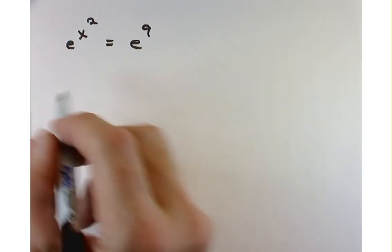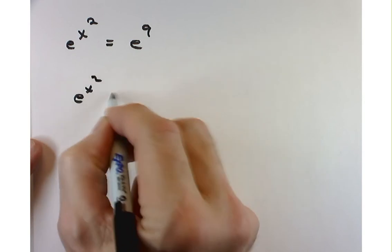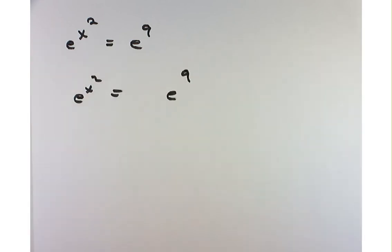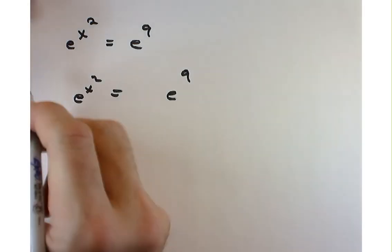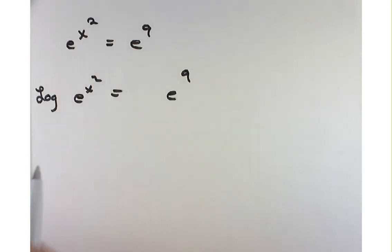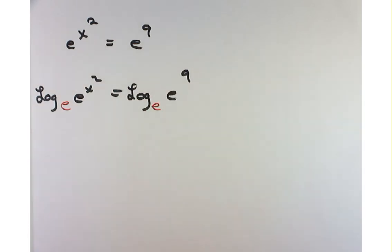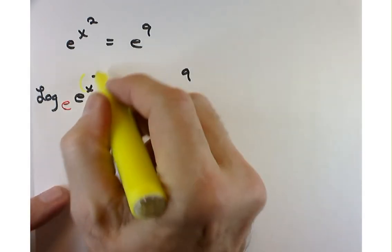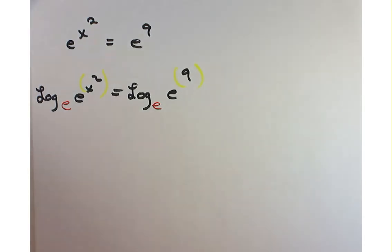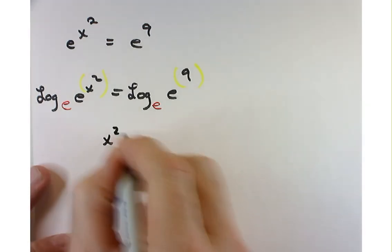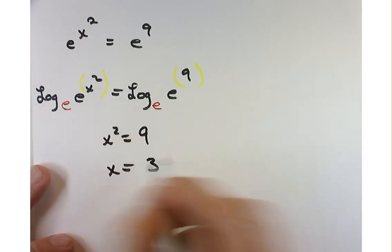Drawing on our previous example, I could take log on both sides. What base logarithm should I choose? Log base e. So it's going to be log base e of e to the x squared equals log base e of e to the 9th. Using our property, that simplifies to x squared equals 9.